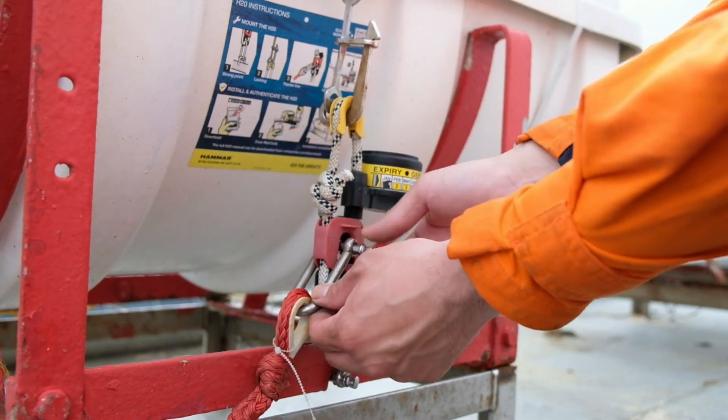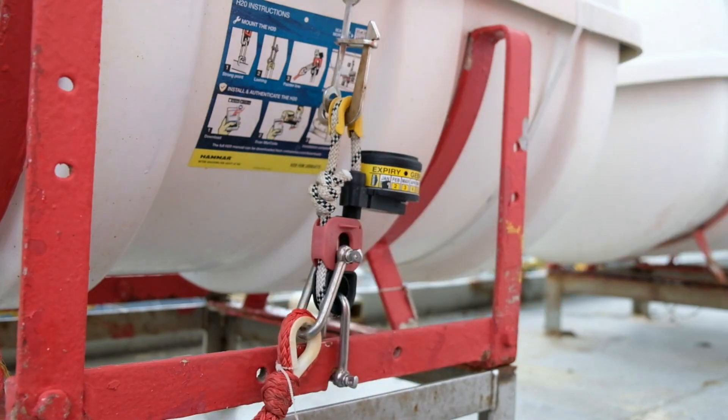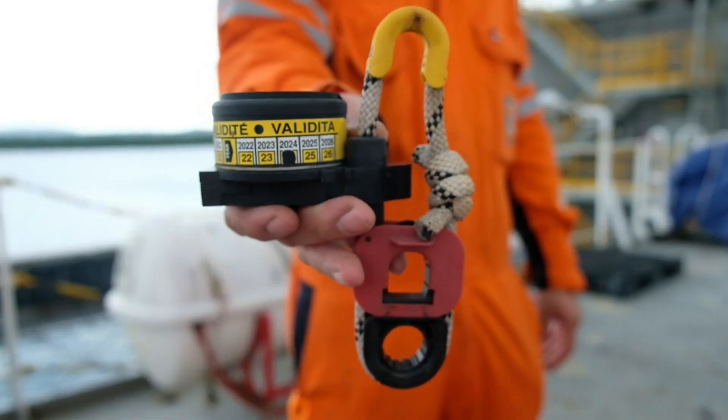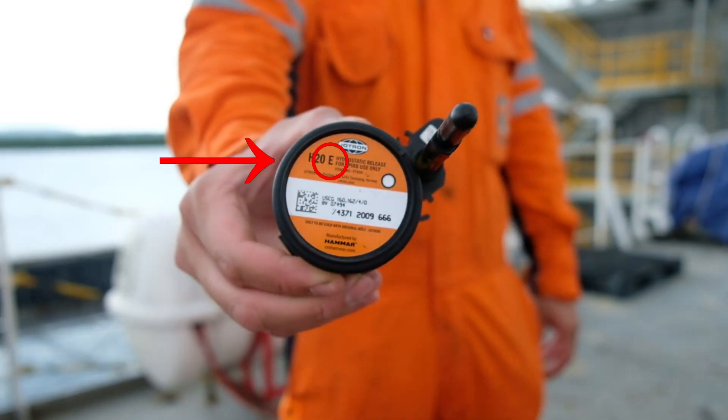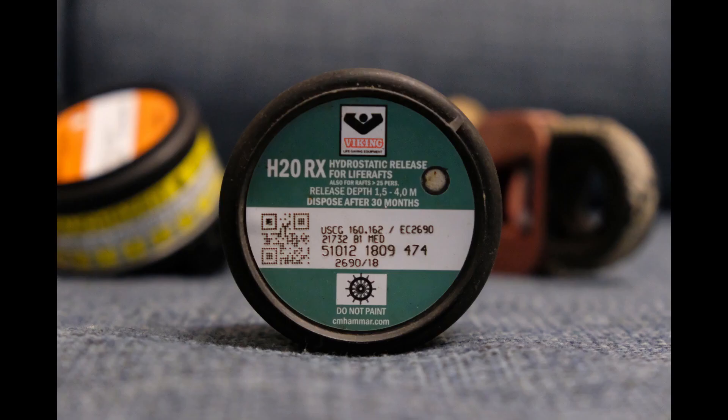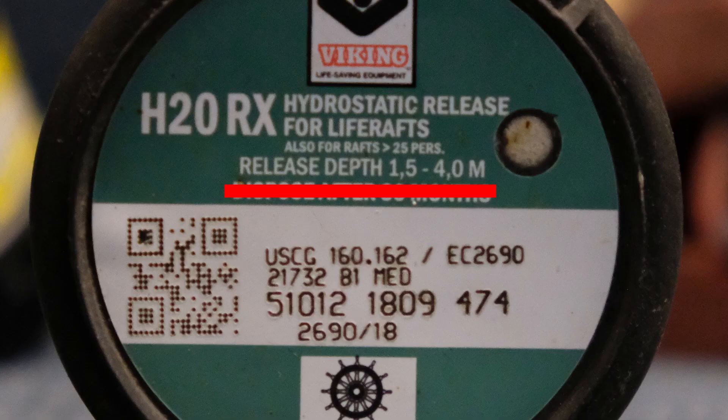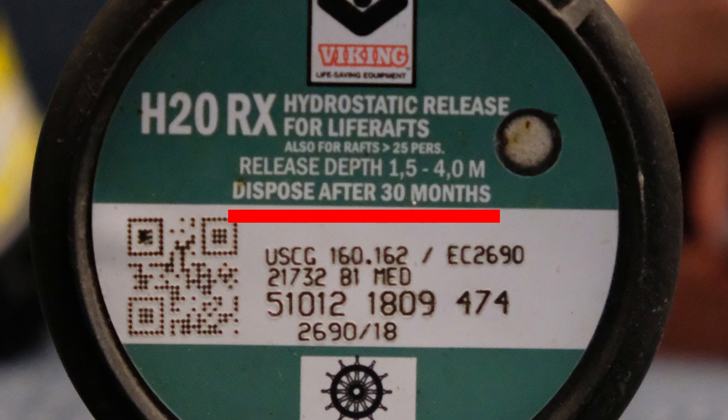So let us go into depth of the HRU. We have here a Hammar H20RX unit. R, which means raft or life raft. And E for EPIRB, to which the units are designed respectively. Activating depth is at 1.5 to 4 meters. And the validity of this unit is up to 30 months.